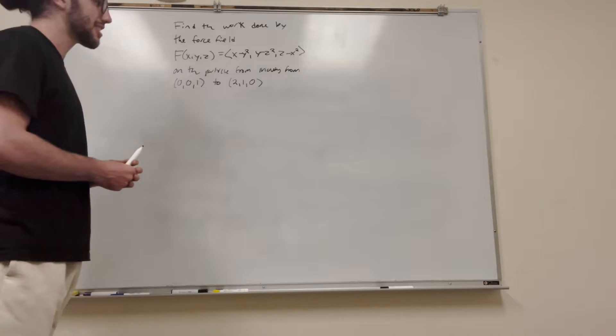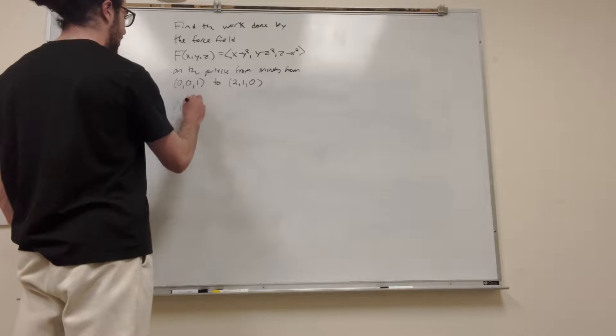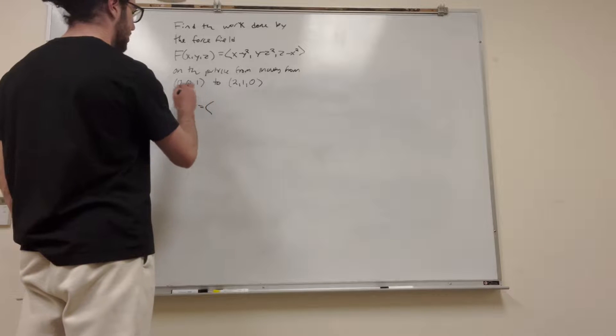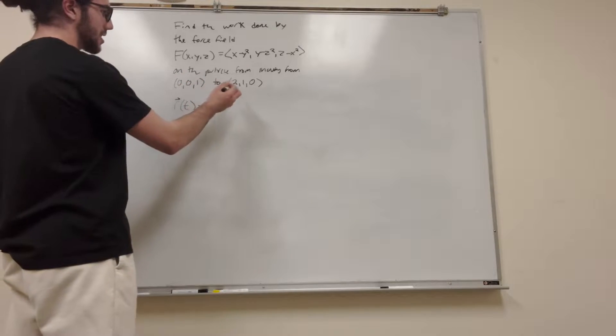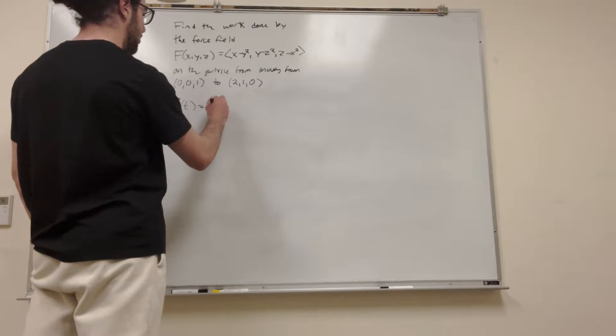So how are we going to do this? Well, this is just like way back to the beginning of Calc 3, but long story short, it's going to be looking like this. So R of T is going to be equal to, so it's the first one, it's going to be 0 plus the change of slope, so it's 2, so it's just going to be 2T, right?